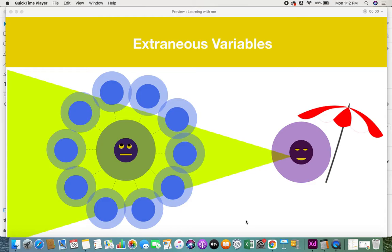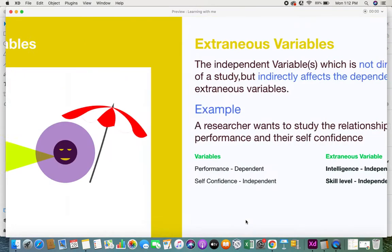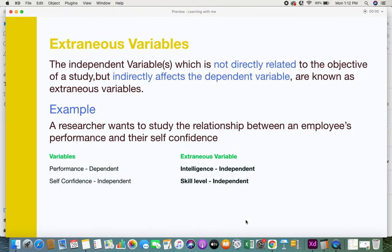Variable types such as independent, dependent, and extraneous variables. I've taken a video before this on dependent and independent variables, so if you haven't seen that video, you can click on the link given in the description box. Without any delay, let's get into this video.